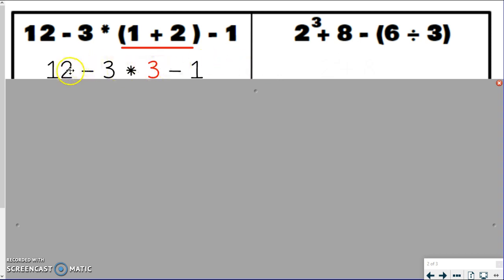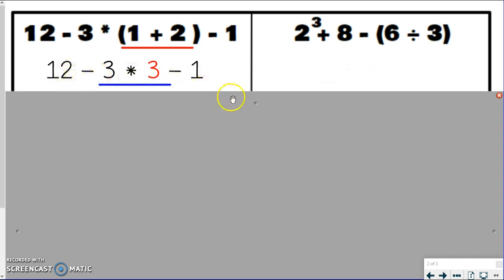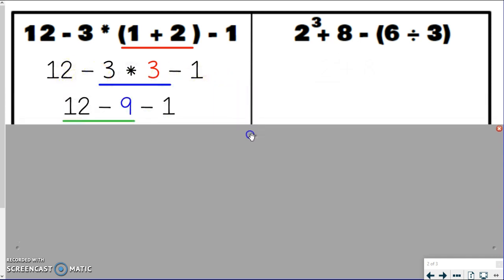All right, so now when I look, I've got 12 minus 3 times 3 minus 1. So I've got subtraction and multiplication. Well, I know I'm going to do multiplication first, so I underlined the 3 times 3. I'm completely ignoring the 12 and the 1. So I know 3 times 3 is 9, but I'm going to rewrite the problem. So I've got 12 minus 9 minus 1. See, I rewrote the problem, but I'm not going to use the 3s anymore because those turned into the 9 by doing 3 times 3.